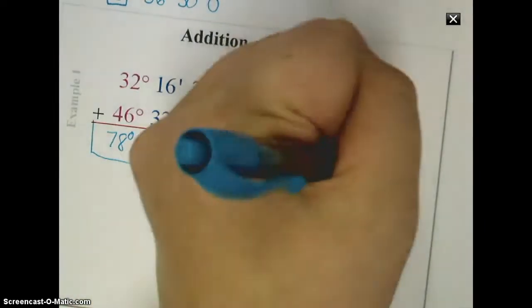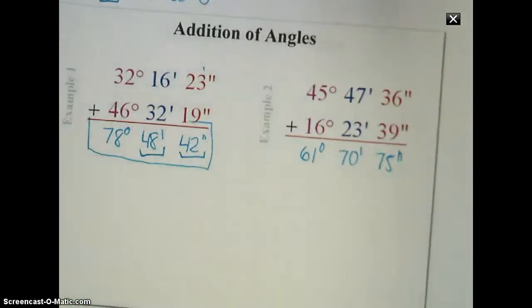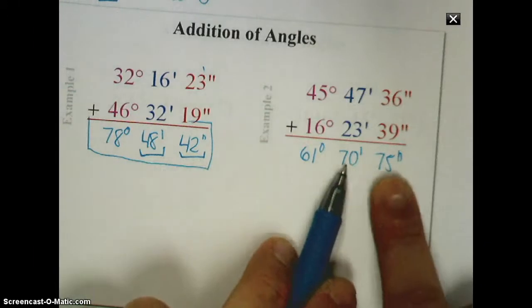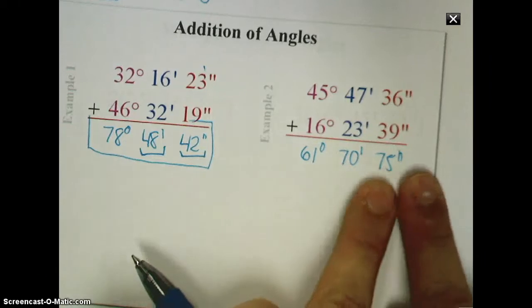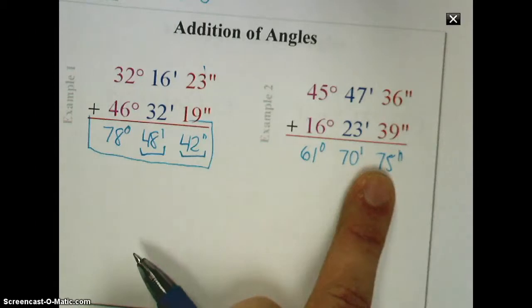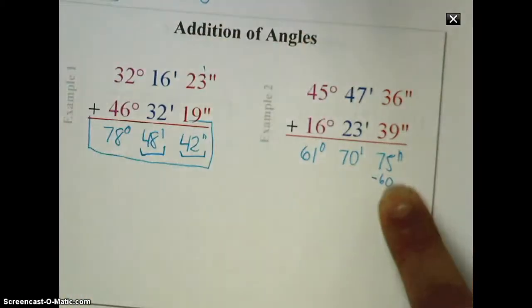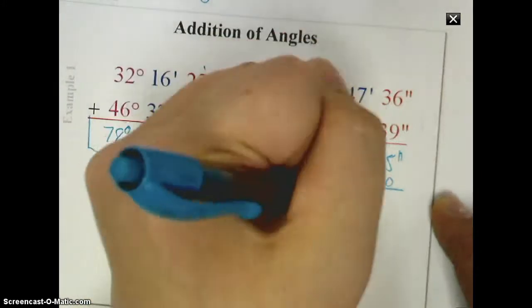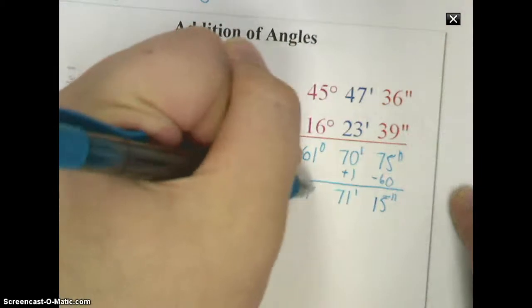However, when we get to the second problem here, and I add this up, 36 and 39 gives me 75. I get 70 right here, and I get 61. This problem is not in simplest form, because each of these measures, both of them actually, are over 60. So I need to group them into the next category. So if you start with the smallest measure here, which is 75 seconds, 75 seconds, think about a clock for a minute, is 1 minute and 15 seconds. So what I'm going to do is simply subtract 60 from this, and when I subtract 60, a full minute away, I need to add a minute over to this. So when I do that, that means I have 15 remaining seconds, and over here now, I have 71 minutes.